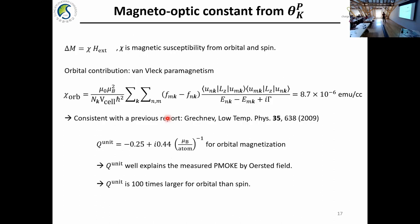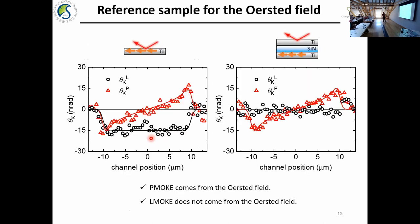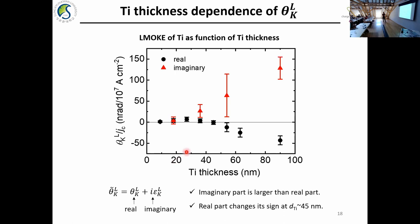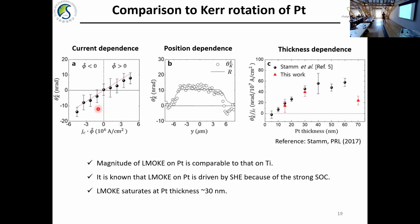Now let's focus on the longitudinal MOKE signal. We measure the longitudinal MOKE with the real part and imaginary part as a function of film thickness. As you can see, it is not monotonic. Especially looking at the real part, it changes sign around 45 nanometers. The imaginary part does not change sign but keeps growing. Let me compare this thickness dependence with the previously reported result for platinum. The color rotation on platinum is dominated by the spin Hall effect, where the thickness dependence is rather simple — it starts to grow and saturates at a small thickness. This saturation is because platinum's spin diffusion length is quite short, less than 10 nanometers. The continued peak growth in titanium suggests that the orbital diffusion length might be longer.